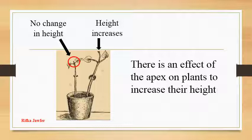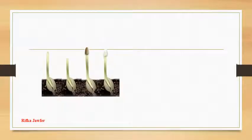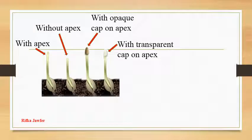Let us think about another experiment to confirm it further. Take four similar germinating plants. Keep one plant with the apex, remove the apex of the other plant, cover the apex of the third plant with an opaque cap and cover the apex of the fourth plant with a transparent cap. Now supply all the environmental conditions equally and leave the system in sunlight for few days.